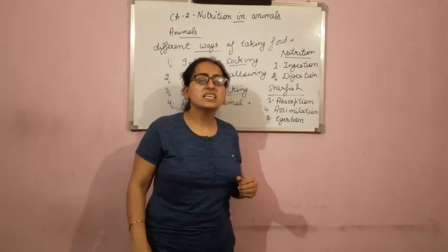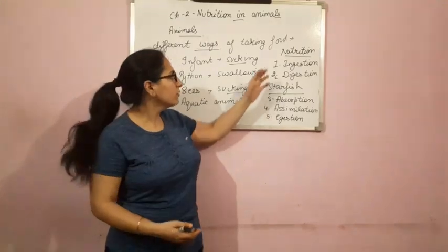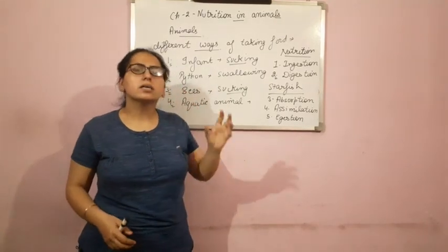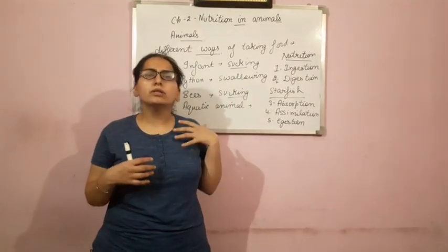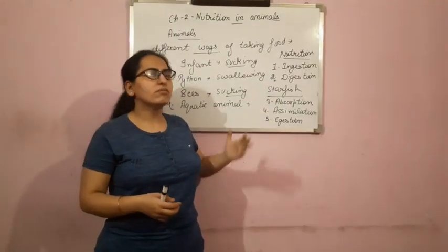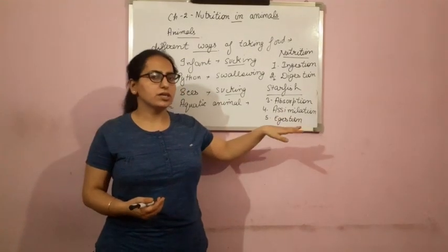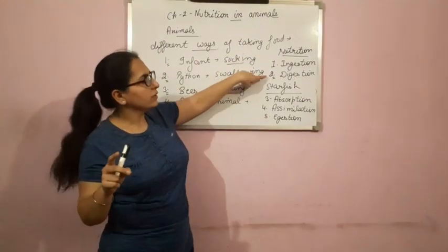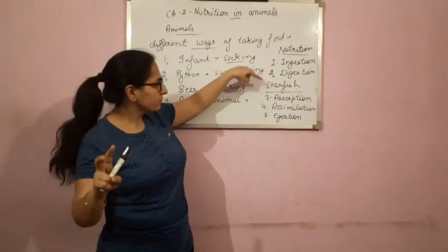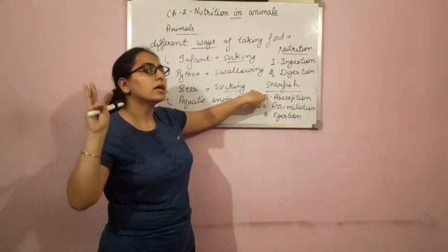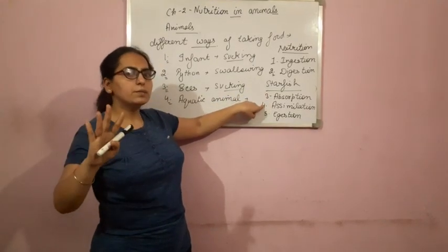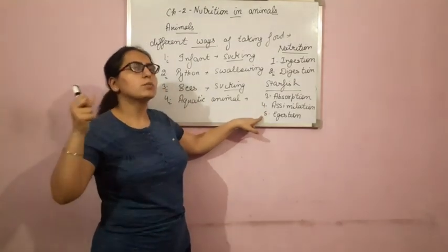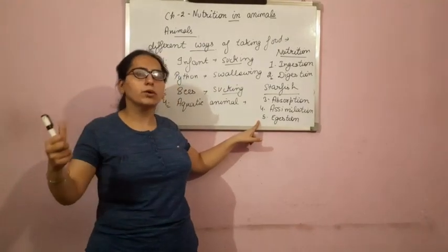Now egestion — egestion means to expel out, to remove. After all these processes, obviously there will be some waste products, or undigested food. The undigested food and waste materials have to be thrown out of your body, and the process of removing them from your body is known as egestion. So these are the five processes of nutrition: ingestion — taking food; digestion — breaking food into simple substances; absorption — taking digested nutrients into the blood; assimilation — using nutrients for growth and energy; and egestion — removing waste products or undigested food from your body.